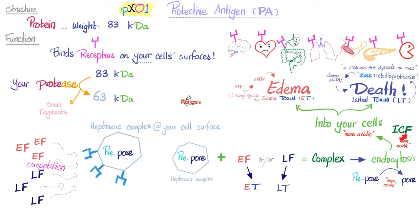As you know, the intracellular fluid is more acidic, because metabolism secretes acids and metabolism happens inside your cell. Therefore, the pre-pore becomes a pore because of the intracellular acidity. Now inside your cell, the edema toxin activates adenylate cyclase, which converts ATP into cyclic AMP. Cyclic AMP causes edema.